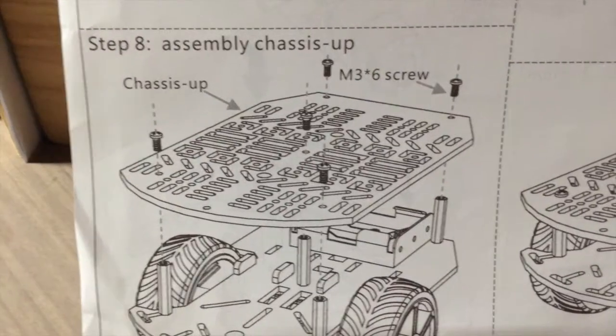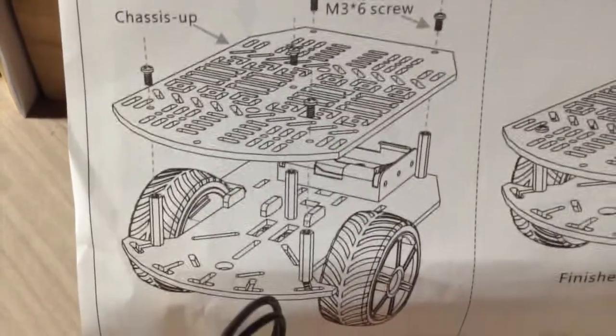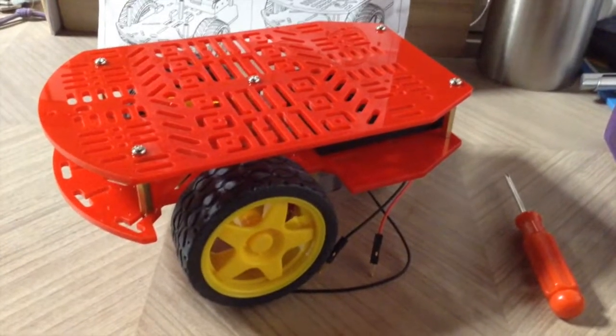The next step in our assembly is to put the top of the chassis on with screws from up above. Well, according to the instructions we are done.